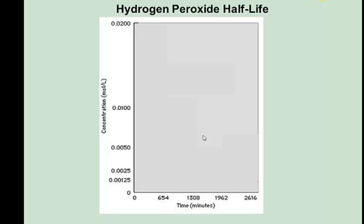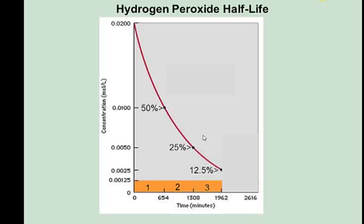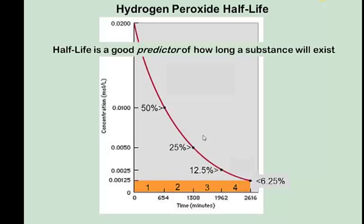Here is a set of coordinate axes showing time and concentration. Starting off at 0.02, after 11 hours the concentration is down to 0.01 molar, or 0.01 moles per liter. After another 11 hours, or another half-life, we're down to 0.005. After another half-life, the concentration is down to 0.005. After three half-lives, the concentration is down to 0.0025, and after four, it's all the way down to 0.00125, and so on. So half-life is a good predictor of how long a substance will exist.